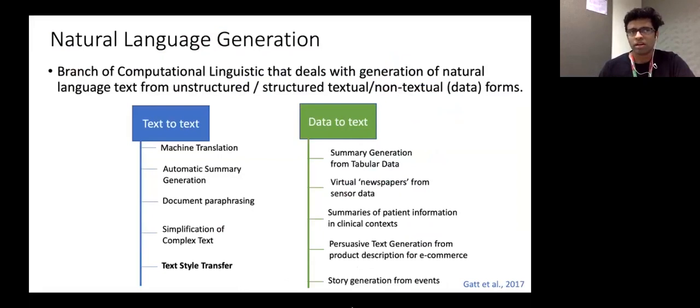Which falls under the umbrella of natural language generation. NLG or natural language generation is a branch of computational linguistics that deals with generation of natural language text from unstructured or structured data in textual or non-textual forms. So to say, if we have to categorize, there will be two categories. One is text to text NLG, under which there will be tasks like machine translation, summarization, document paraphrasing, text simplification, and text style transfer.